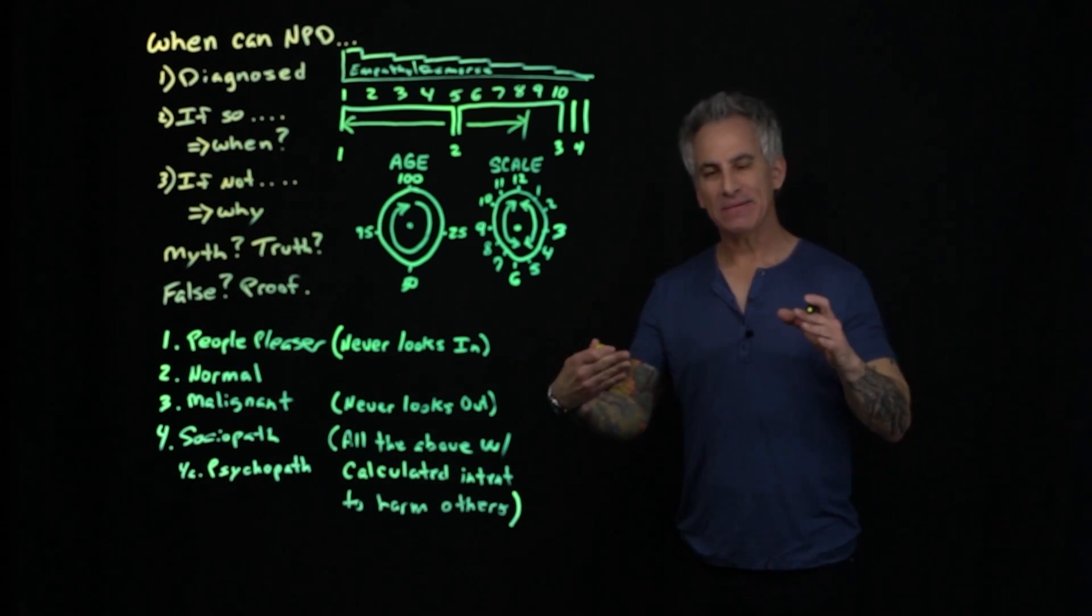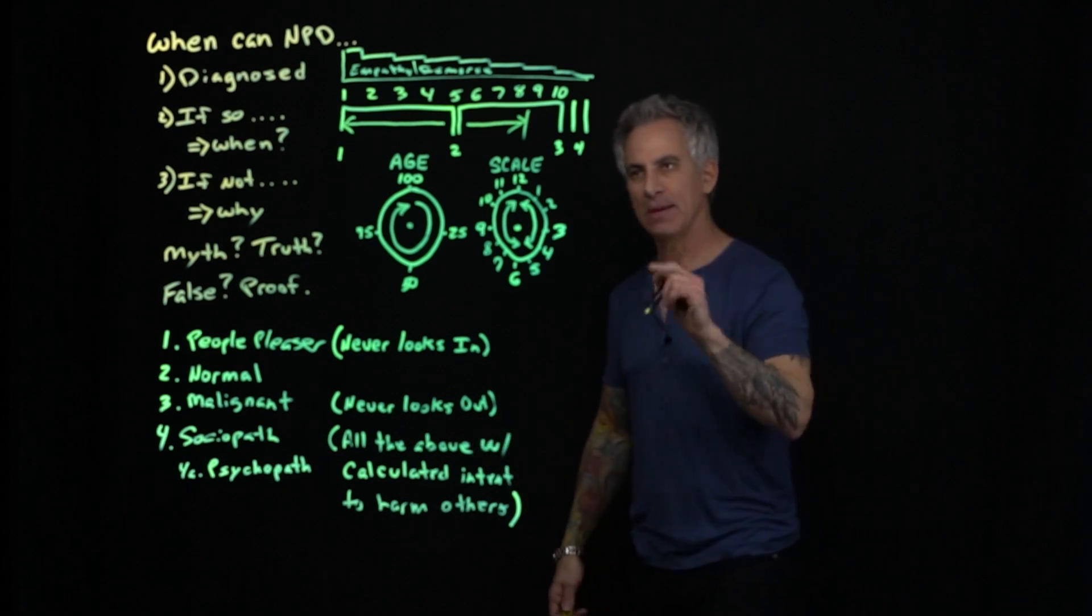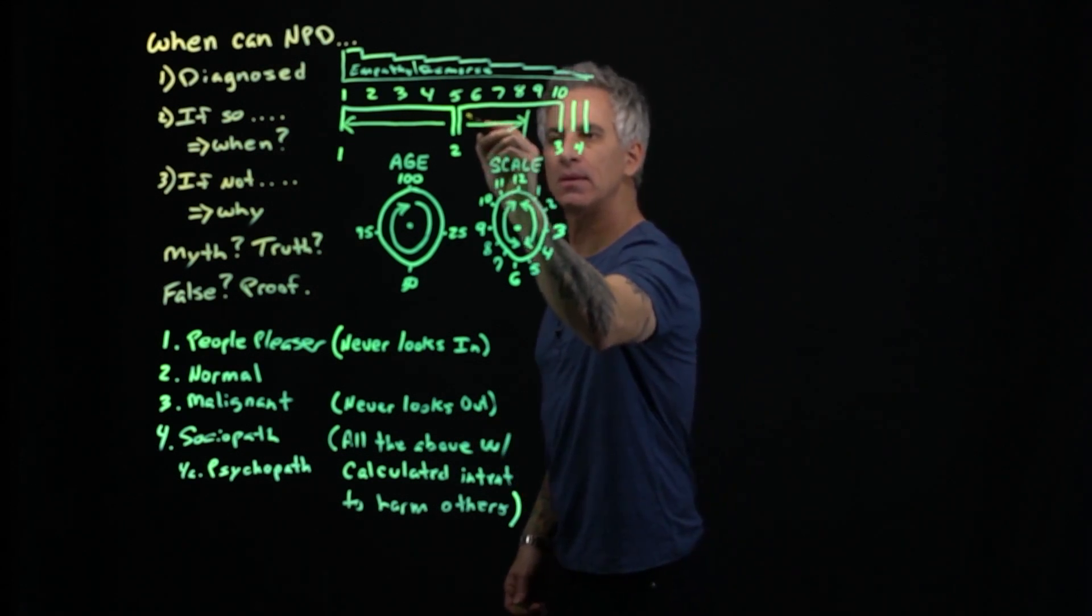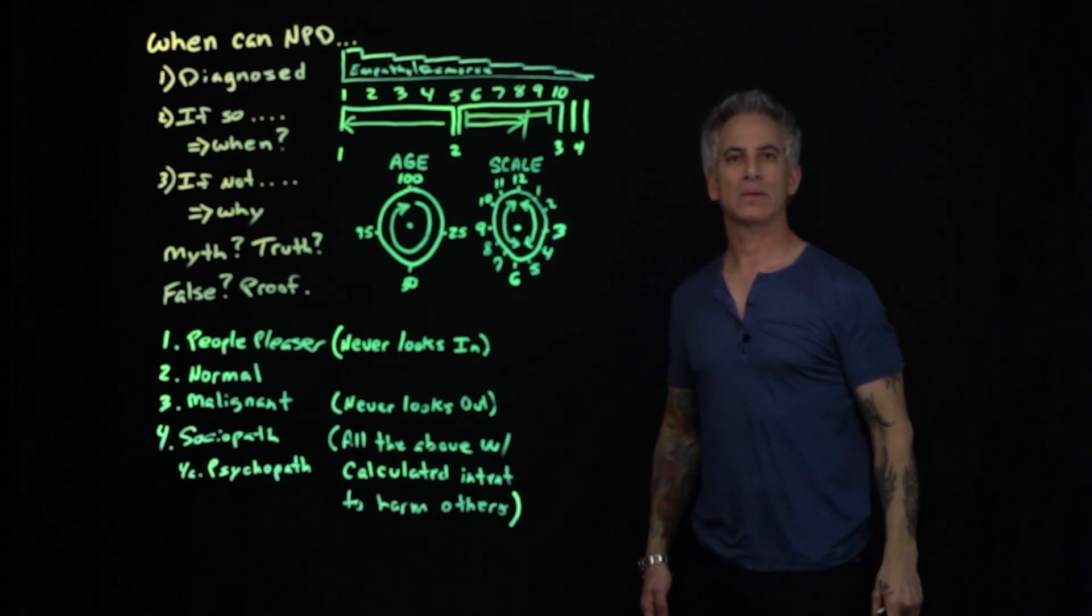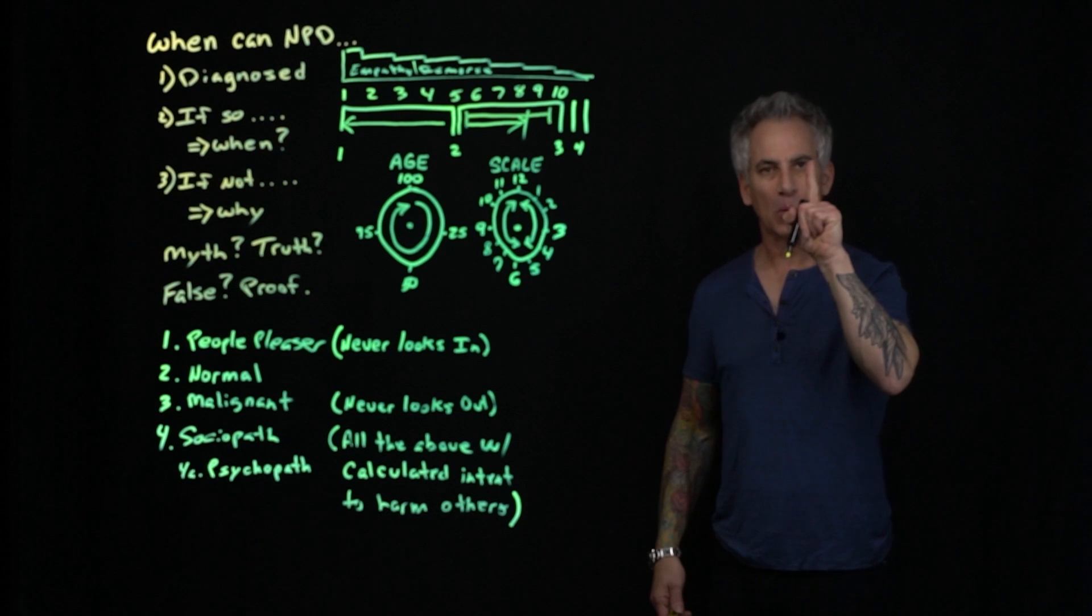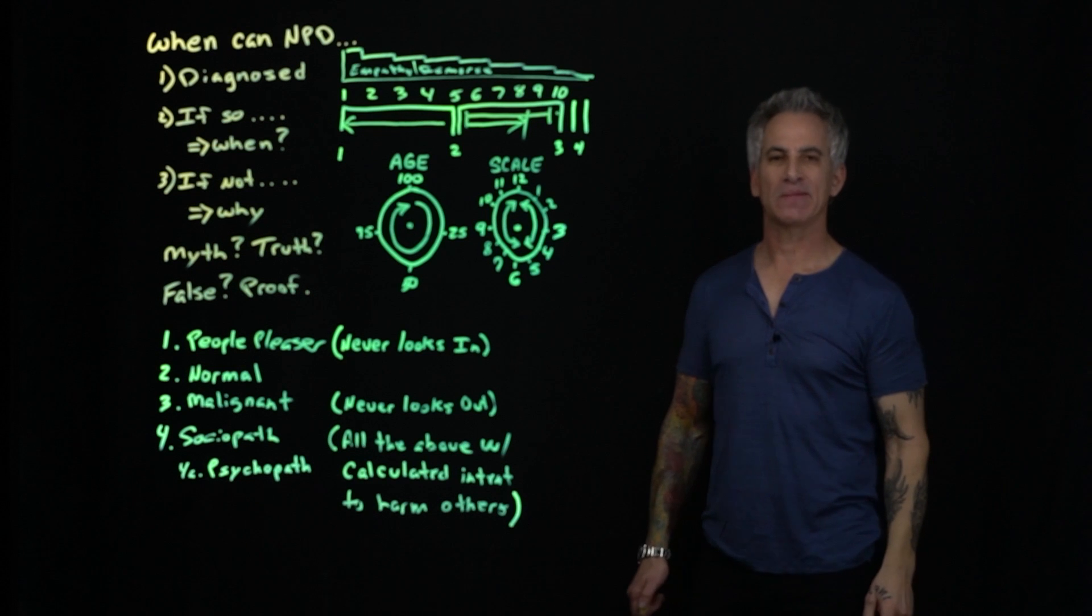Malignant narcissist and sociopath and psychopaths are rarely diagnosed. They are rarely seen in the wild. They are rare. Now, what is not rare, sad, but what is not rare is all the people that are all the way to the end of that scale and all the way to there. That's not rare. That's everyday life. And that's why we're here. That's why I'm doing all of this. Everyday life.